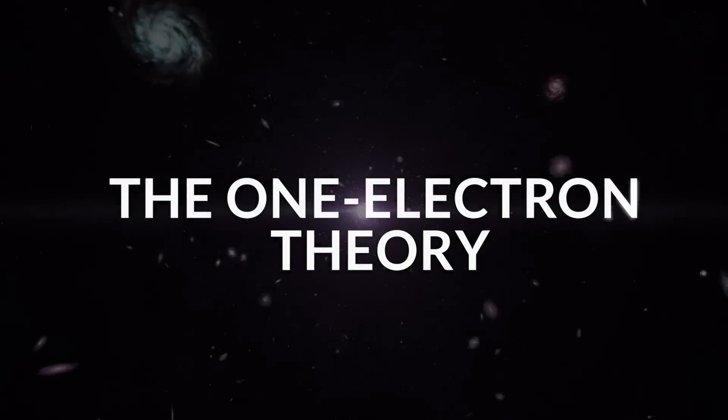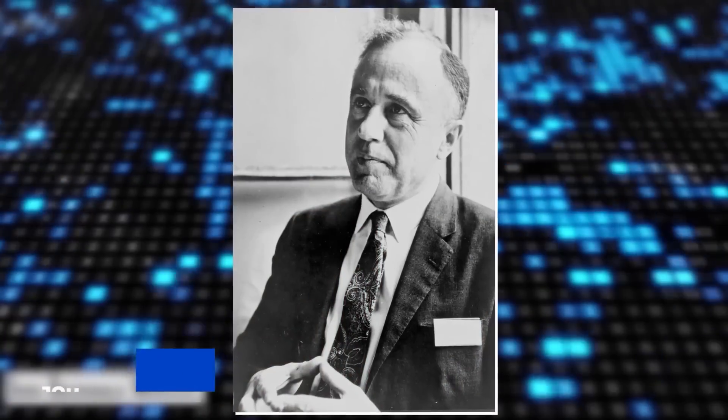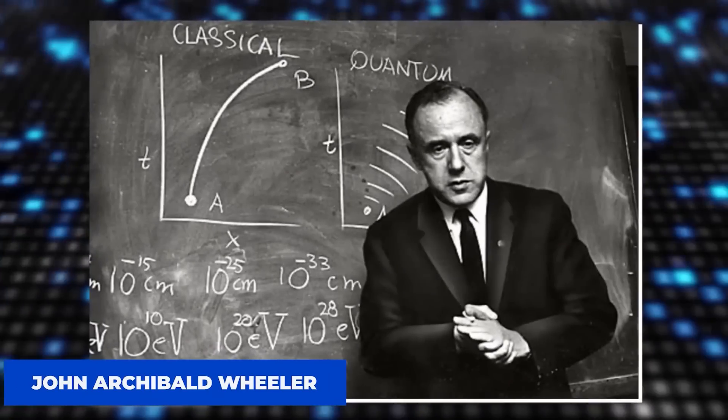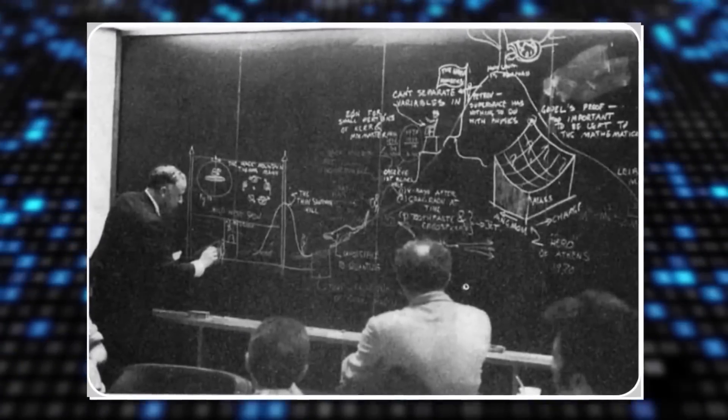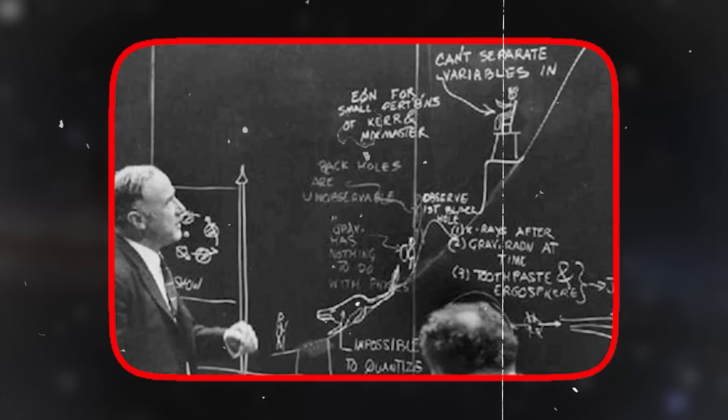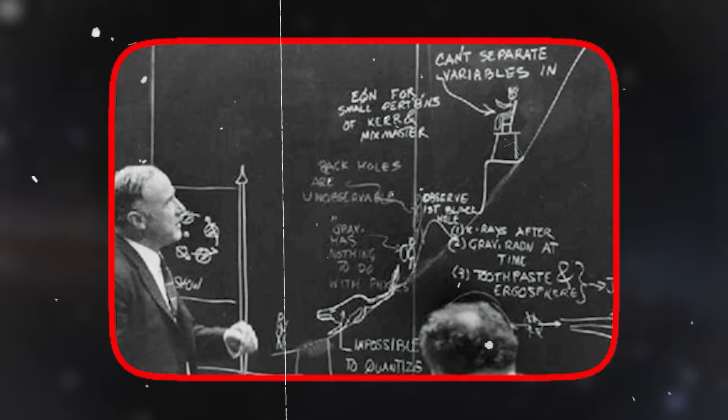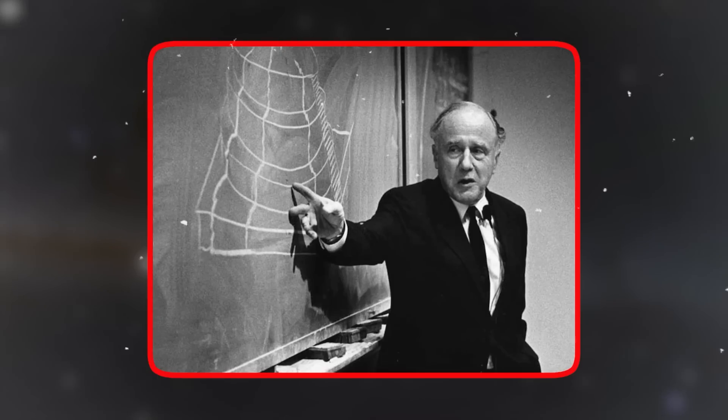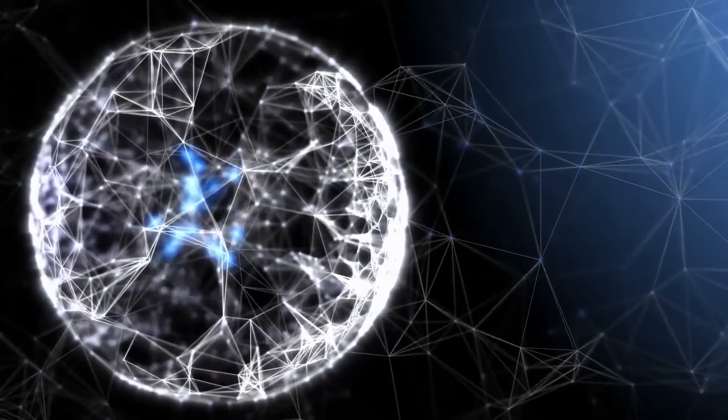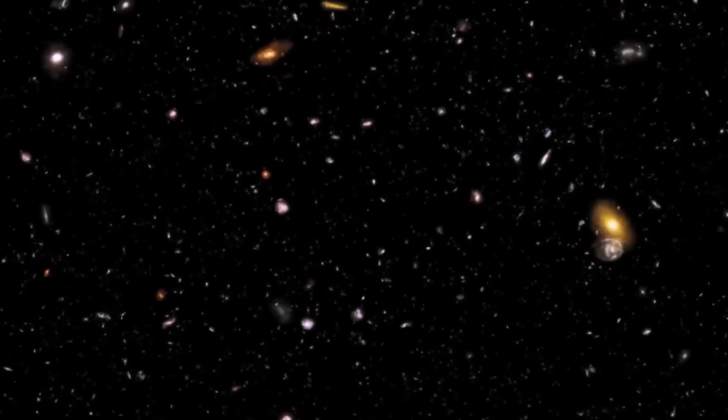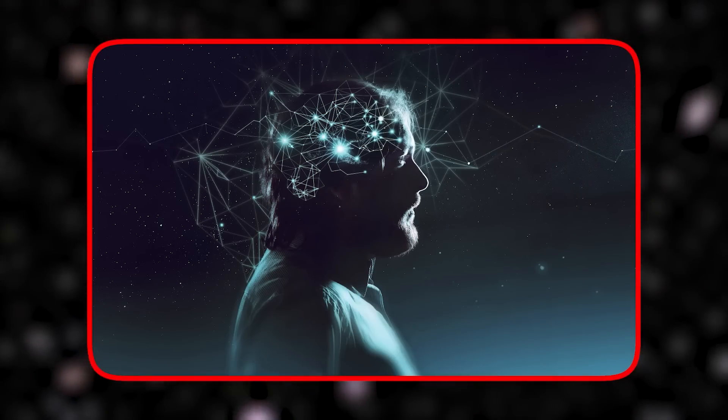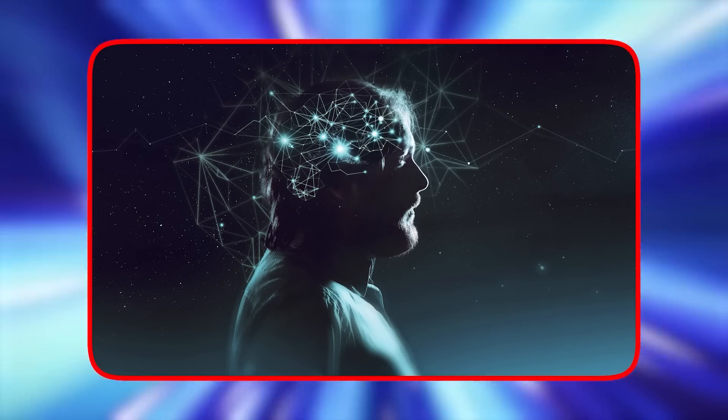The One Electron Theory. John Archibald Wheeler was a theoretical physicist who worked on the hydrogen bomb at Los Alamos and taught at Princeton. He is widely known for his work and interest in general relativity. One of his most mind-blowing theories is the One Electron Theory. This theory states that every electron in the universe is one particle that travels backward and forward continually through time. This can even answer quantum physics most unanswered questions.